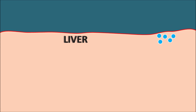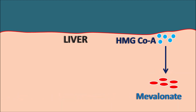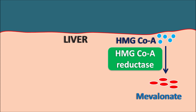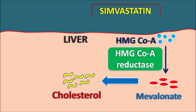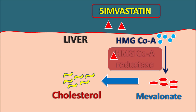Within the liver, cholesterol is synthesized from the intermediate HMG-CoA. This HMG-CoA is converted into mevalonate by the important enzyme HMG-CoA reductase. This is the rate-limiting enzyme controlling the biosynthesis of cholesterol within the liver. This enzyme is responsible for the conversion of HMG-CoA to mevalonate, and then mevalonate by sequential steps is converted into cholesterol. Simvastatin binds to this HMG-CoA reductase enzyme, thereby inhibiting its activity, which results in inhibition of cholesterol biosynthesis within the liver.